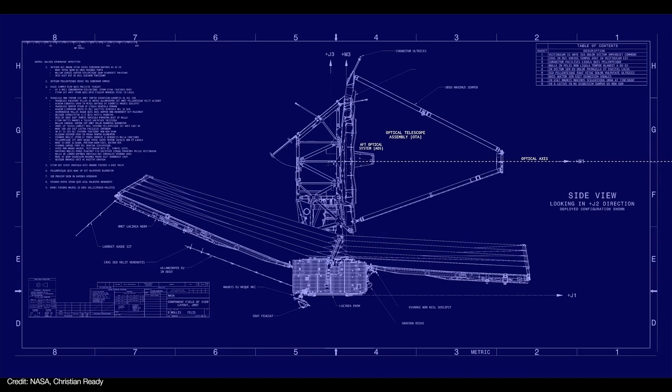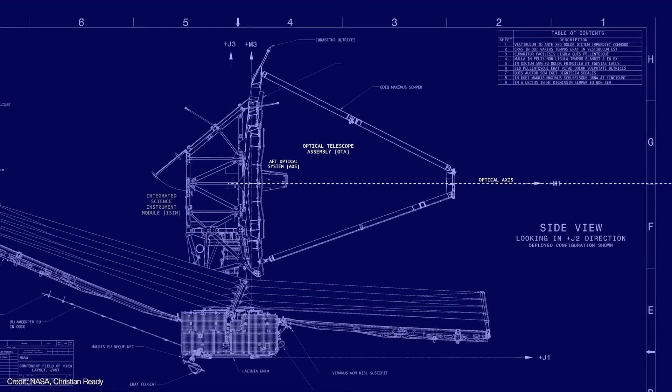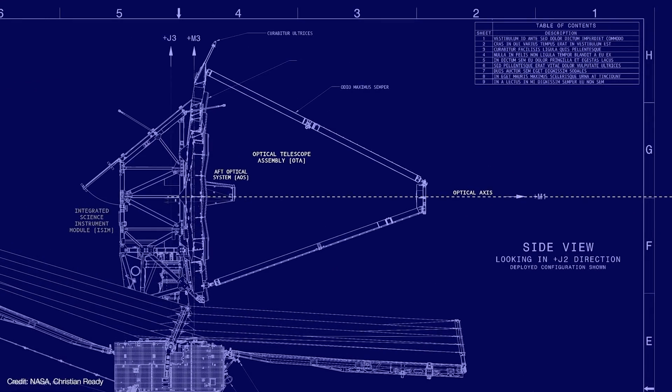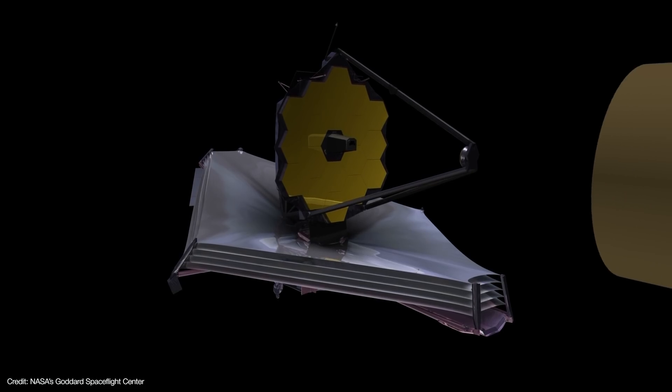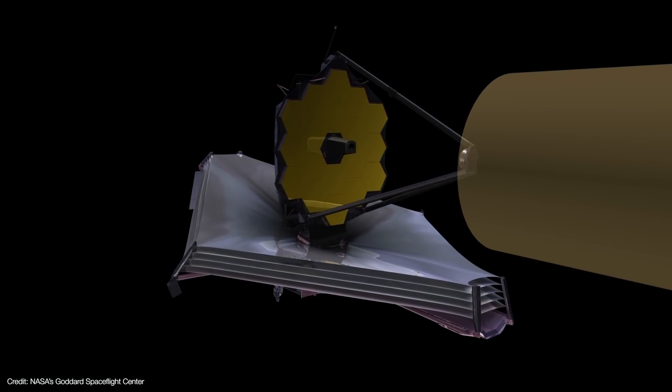The telescope part of Webb is called the Optical Telescope Assembly, or OTA for short. The primary mirror's job is to collect as much light as possible. The more light it collects, the fainter the objects it can see and at higher resolution.